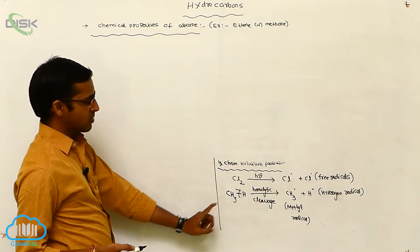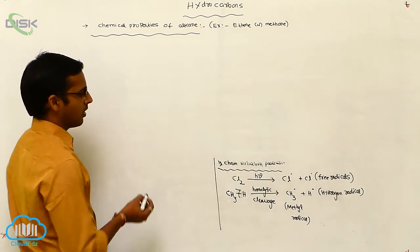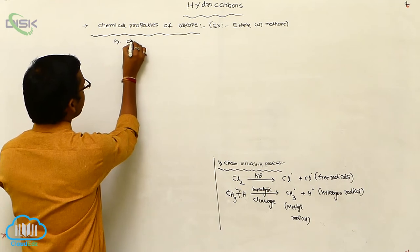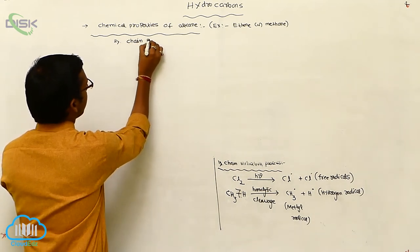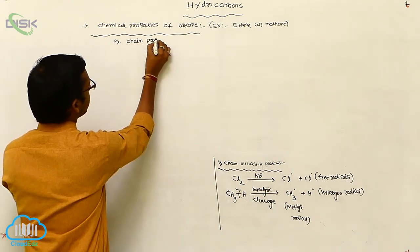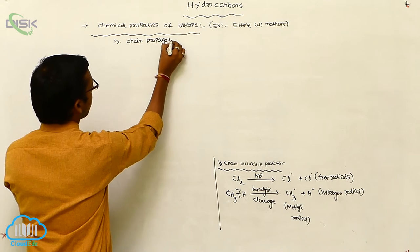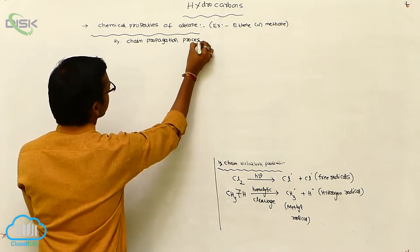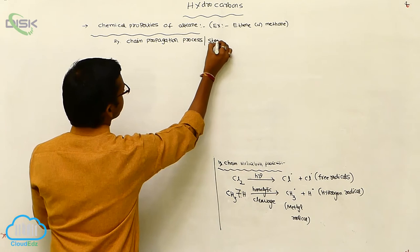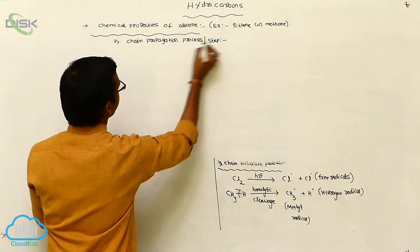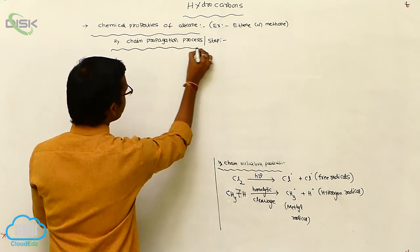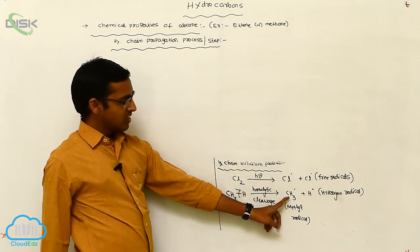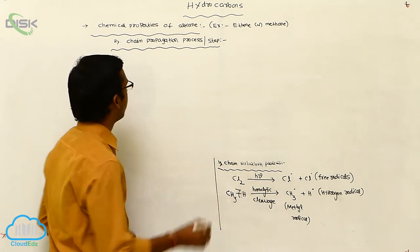This is your first step — chain initiation process is completed. The second one is chain propagation step. In chain propagation process, here in chain initiation process, methyl radical is formed.